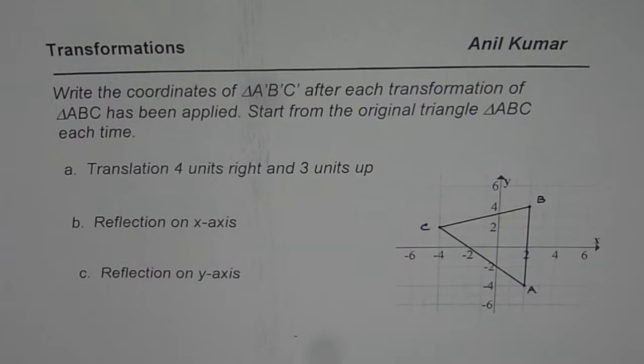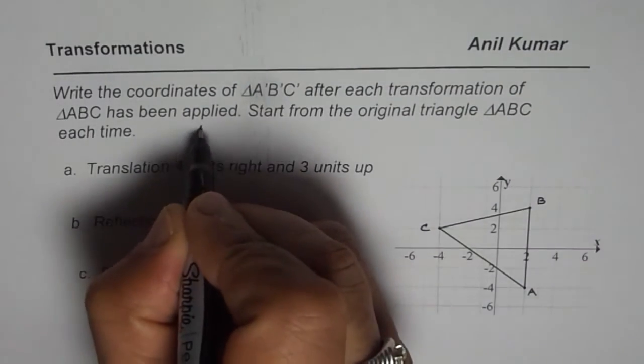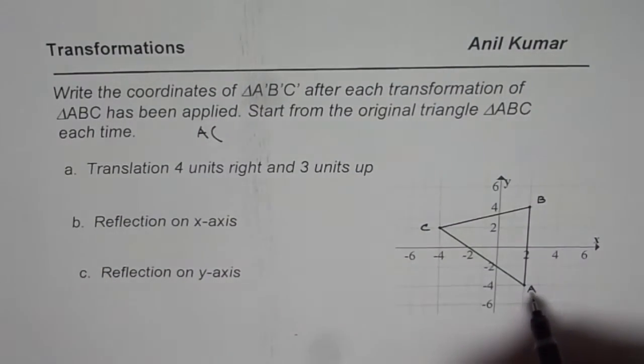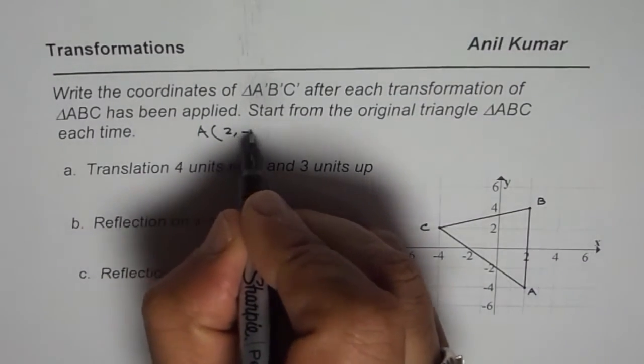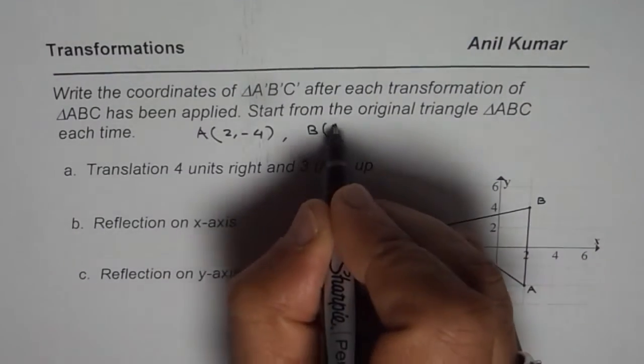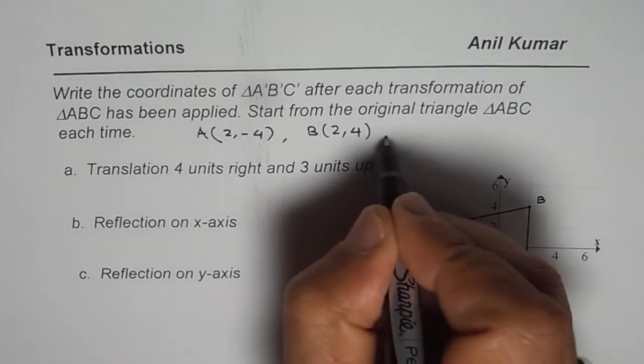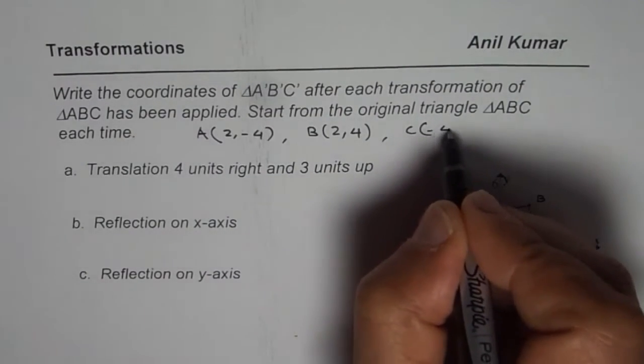You can pause the video, answer the question and then look into my suggestion. Now to begin with, let us write down the coordinate points for ABC first. So A is (2, -4), B is (2, 4), and C is (-4, 2).